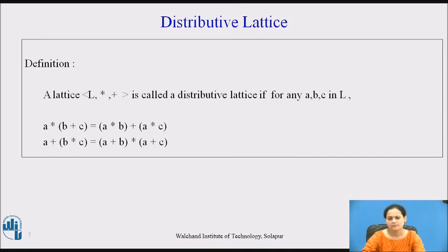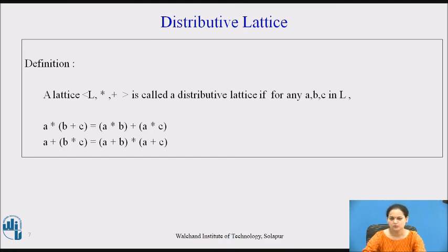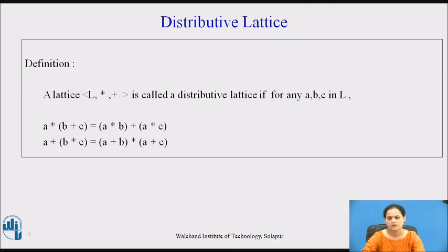We have come up with this third type because there are certain algebraic systems where the properties of commutativity and associativity hold, and at the same time if you are able to satisfy the distributive property for the two binary operations it may result into something else — which we classify as a distributive lattice. It also satisfies the absorption law, so along with commutativity, associativity, and absorption, if you add the distributive property it results in a distributive lattice.